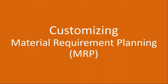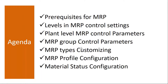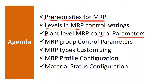This conference will now be recorded. We'll be starting on the topic of configuration and customizing MRP. The topics we are going to cover: we will see prerequisites for MRP — what settings we need to activate MRP in the system. Levels in MRP control settings — the various levels where we can do the settings. Then plant level MRP control parameters, MRP group control parameters, and MRP type configuration.